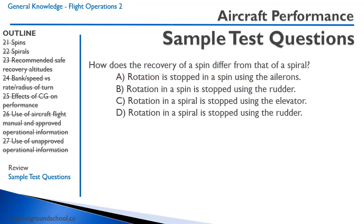How does recovery from a spin differ from recovery from a spiral? In a spin the aircraft is stalled and rotation is stopped using the rudder — using ailerons would likely aggravate the spin. In a spiral the aircraft is not stalled and can be recovered with ailerons. Answer: B — rotation in a spin is stopped using the rudder.